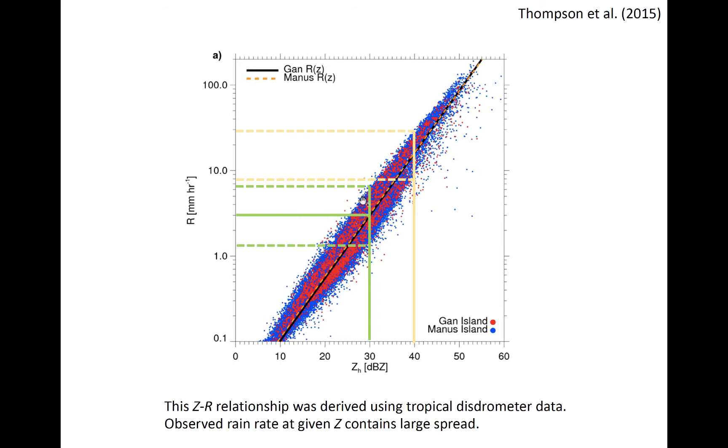However, if we consider the spread and observed rain rate for the bulk of observations at 30 dBZ, we might actually get a rain rate anywhere between about 1.5 and 6.5 millimeters per hour. That's almost a halving or doubling of the deterministic estimate.